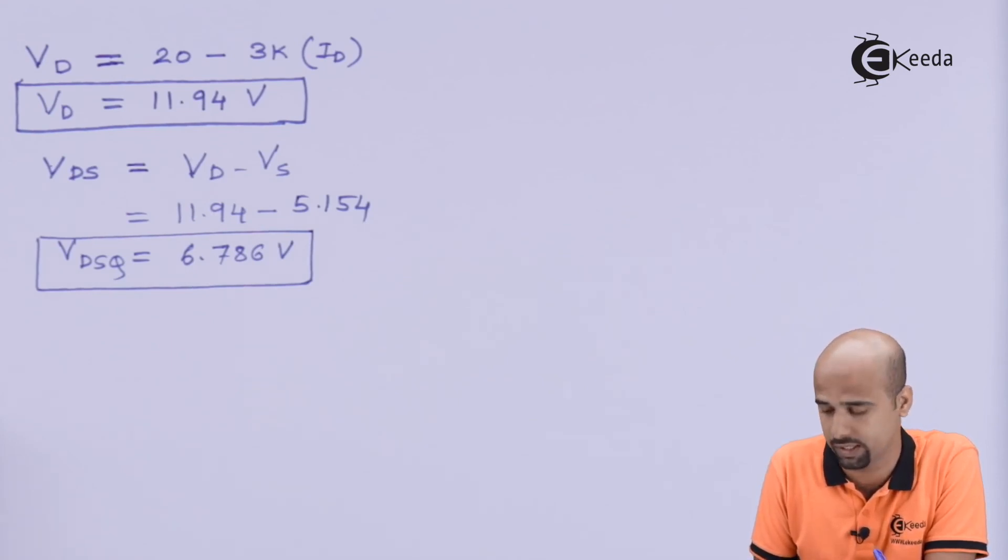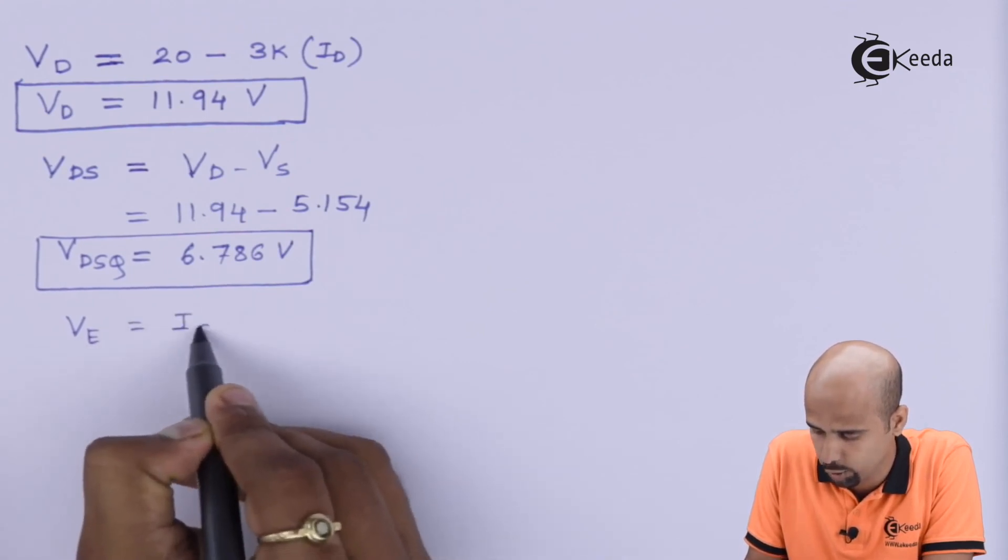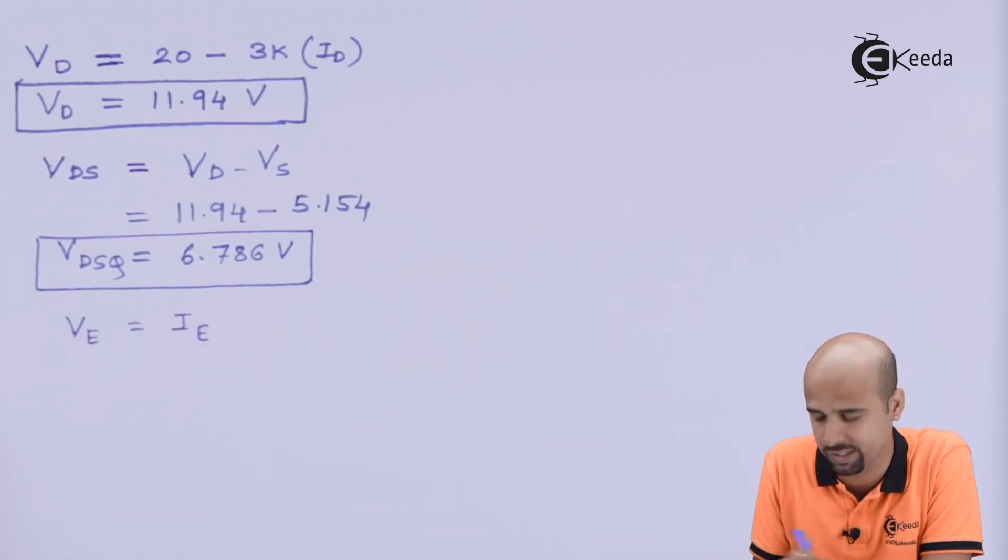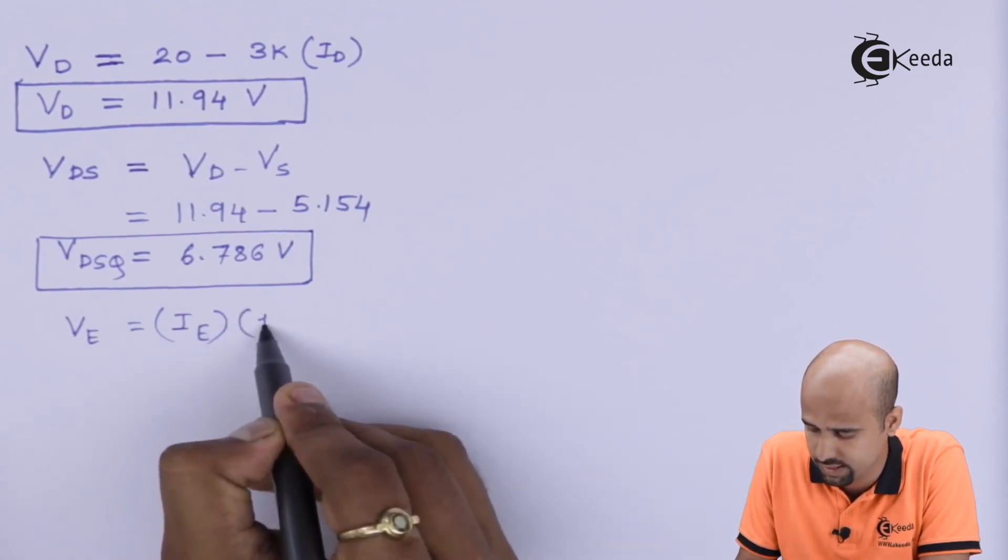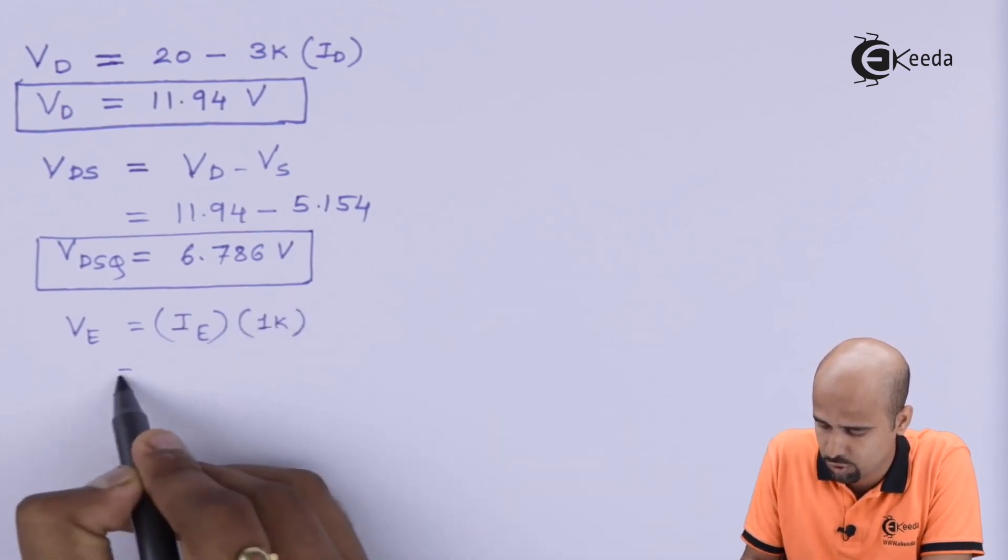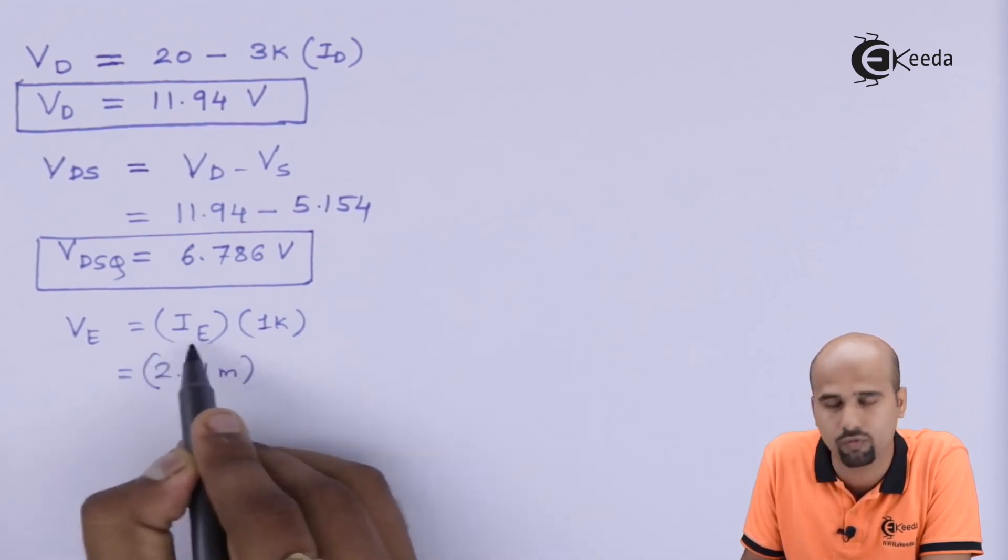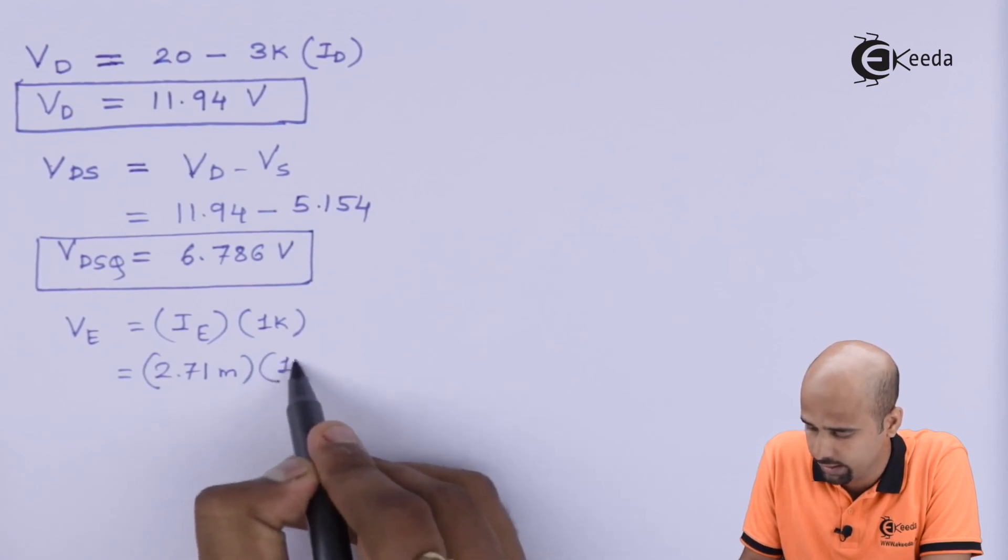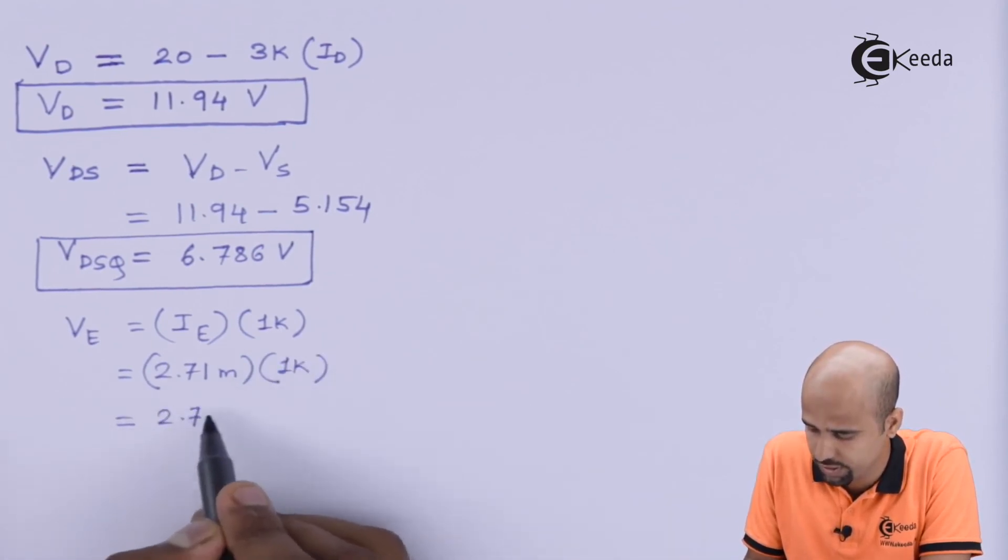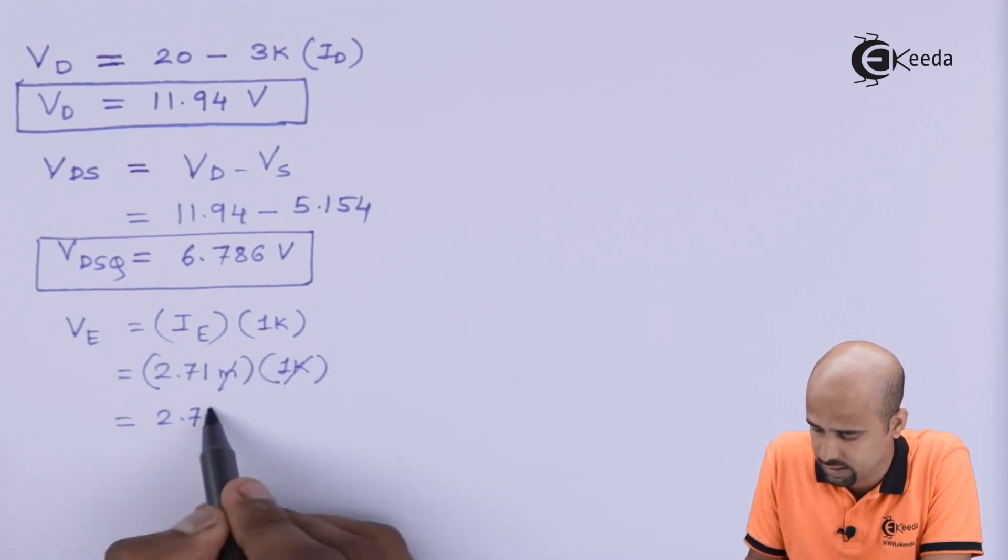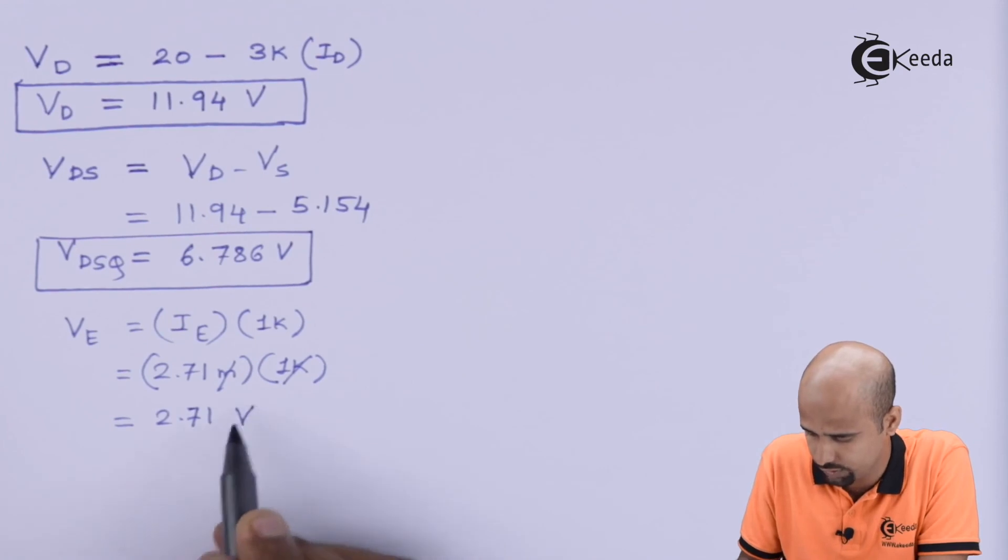Now, the last part remaining is the value of Ve. Ve is nothing but the value of current flowing through emitter resistance and the value of the resistance that is 1k. So, we can easily get that 2.71 milli that was the value of Ie and 1k is nothing but the emitter resistance. We can easily get 2.71 is the value of Ve. Okay!